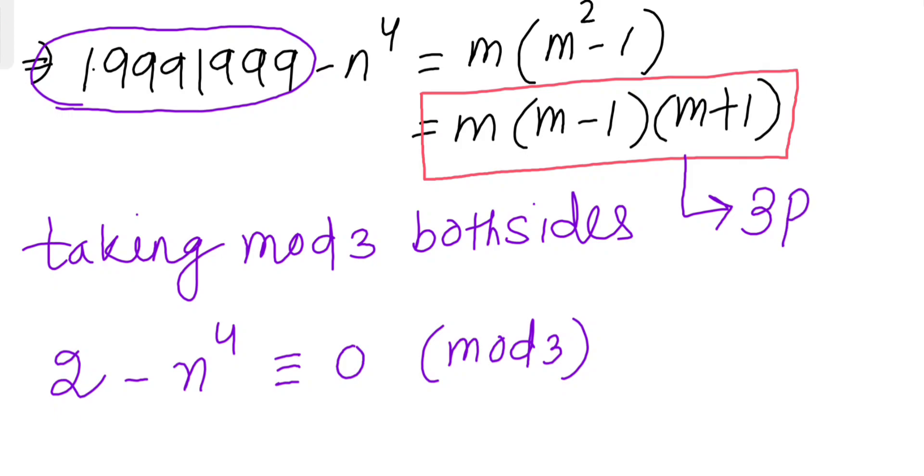Basically, I have taken mod 3 both sides. This one becomes 0 mod 3, and this side left gives 2 as a residue. Now the only thing to check: